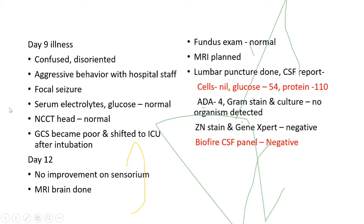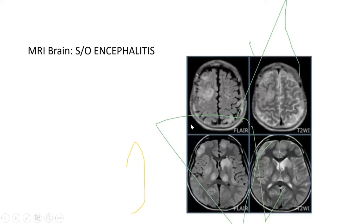Serum electrolytes and glucose were normal. NCCT was normal. There was no improvement in sensorium even on day 12. MRI brain was done. Lumbar puncture showed no cellularity, and protein and glucose were normal. BioFire panel for CSF for common viral and bacterial causes of meningoencephalitis was normal. AFB smear and GeneXpert were negative. We only had the diagnosis of dengue fever, but dengue leading to encephalitis is a rare scenario. MRI brain also revealed encephalitis with hyperintensities in the cerebral cortex.